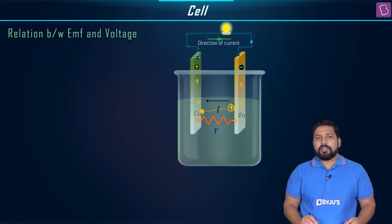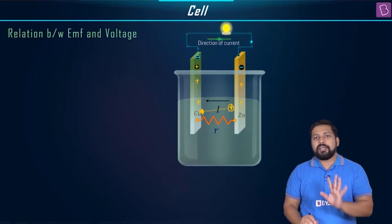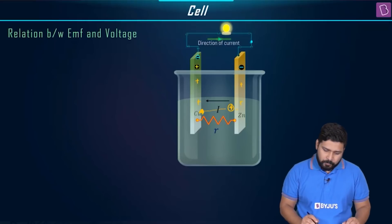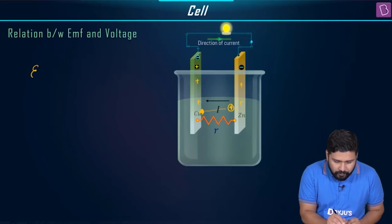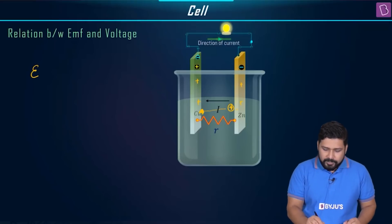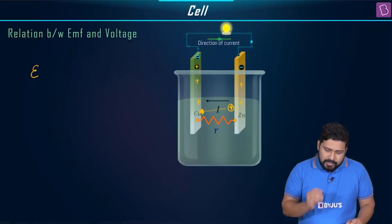The amount of work done in completing the full cycle is called as EMF. So EMF is the total work done to complete this full cycle.